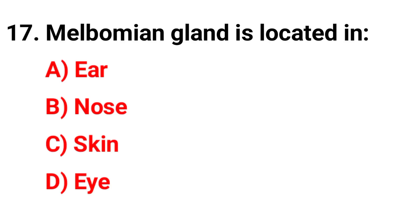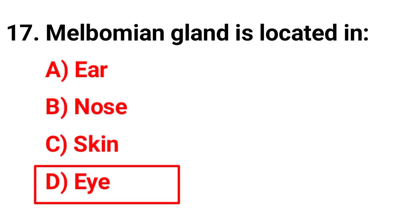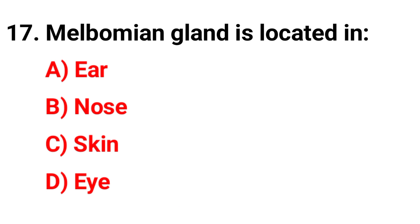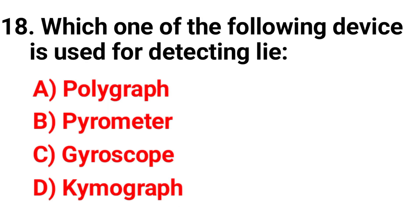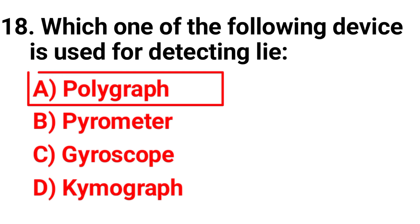Question 17: Malpighian gland is located in — (options not captured). Question 18: Which one of the following devices is used for detecting lies? The correct answer is option A — polygraph.